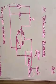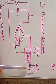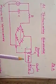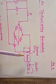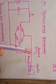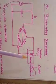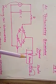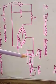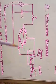Next is the AC tachometer generator. In the AC tachometer generator, the rotating shaft is connected to the rotor part. The rotor rotates while the stator coil in the stator part remains stationary. When the rotor rotates, again due to Faraday's laws of electromagnetic induction, when the flux cuts the conductor, an EMF is induced.